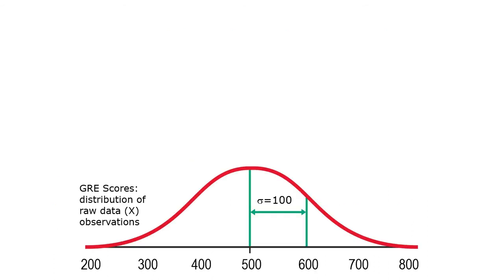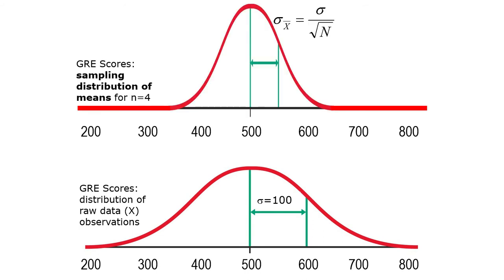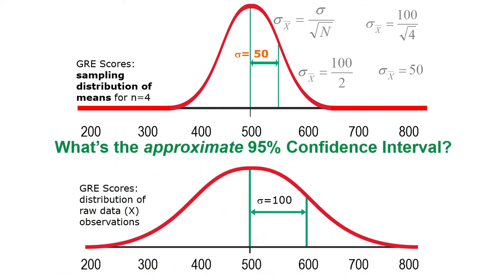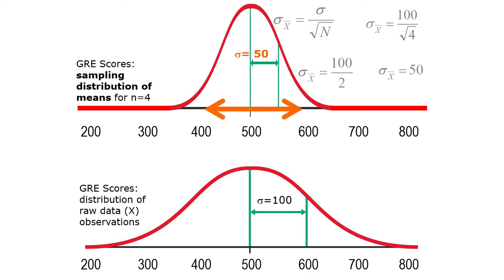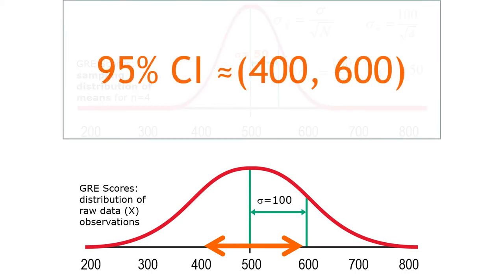Let's look back at this distribution. The raw scores have a mean of 500 and a standard deviation of 100. Our sampling distribution has a standard error of 50. For an approximate 95% confidence interval, we go two standard errors up and two standard errors down from the mean. Two standard errors down is 100 points below 500, so down to 400. Two standard errors up is 600. So we report our mean is 500 and our confidence interval is approximately 400 to 600.